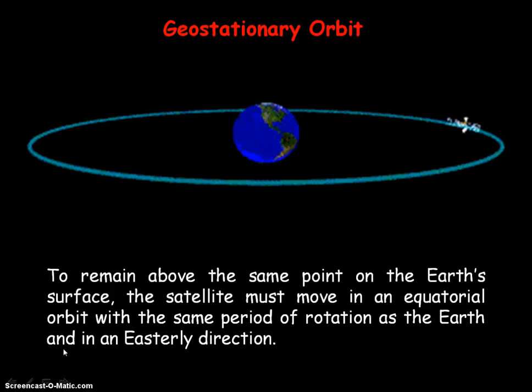The main use of geostationary satellites is in telecommunications, that is, transmitting or receiving TV and telephone signals. So a transmitter or receiver dish on Earth can be directed to a fixed point in the sky where the geostationary satellite is.